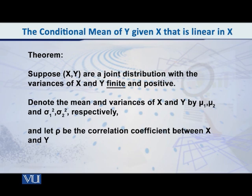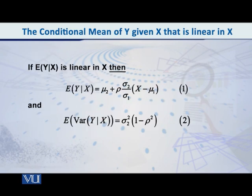If we adopt all these notations, then according to the theorem, which has its own proof, which I am not going to go into, but I am just giving you the result, according to all that derivation, if the expected value of Y given X is linear in X, then it is according to the following equation: E(Y|X) is equal to μ₂ plus ρ(σ₂/σ₁) multiplied by (x - μ₁).